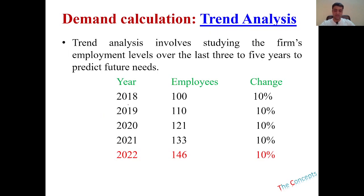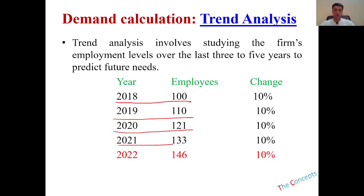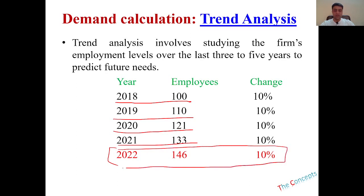Let's look at a simple example, and then we'll go to our Excel file to see how we can plan for HR based on our trend analysis. Looking at the data for 2018, 2019, and 2021 — we don't have data for 2022. Based on this data, you have 100 employees in 2018, 110 in 2019, 121, and 133 in 2021.